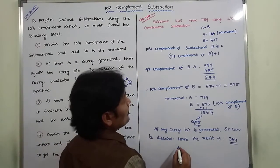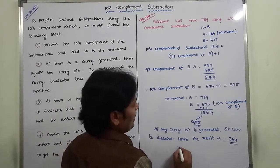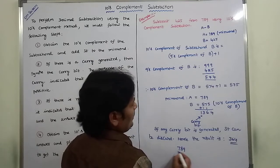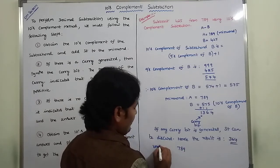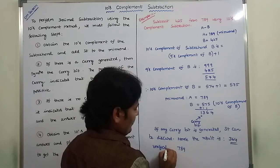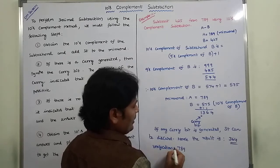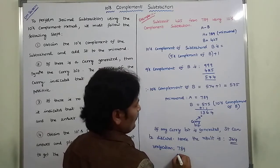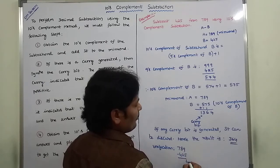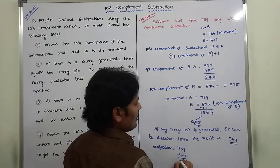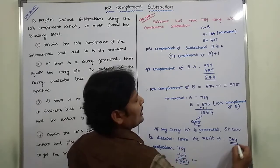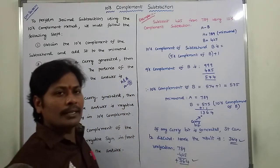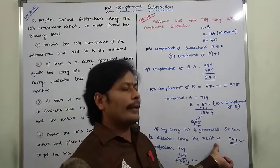Now we are checking the answer — verification. 789 minus 425: 9 minus 5 is 4, 8 minus 2 is 6, 7 minus 4 is 3, giving 364. Yes, here we are getting the same answer, so our answer is correct.